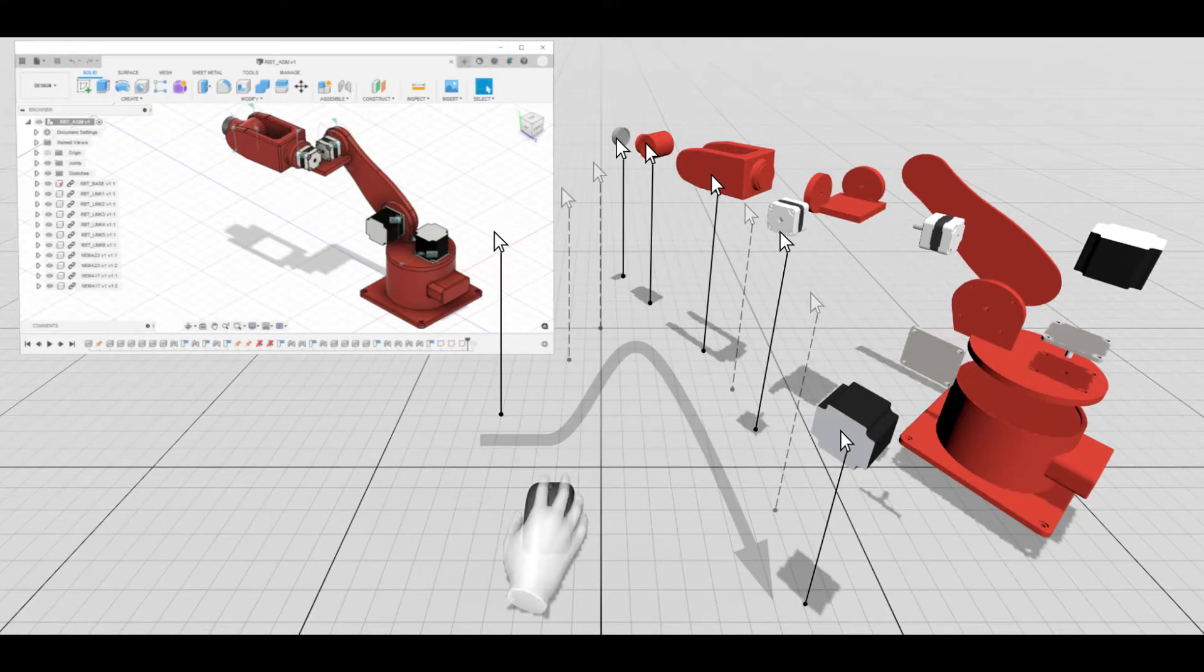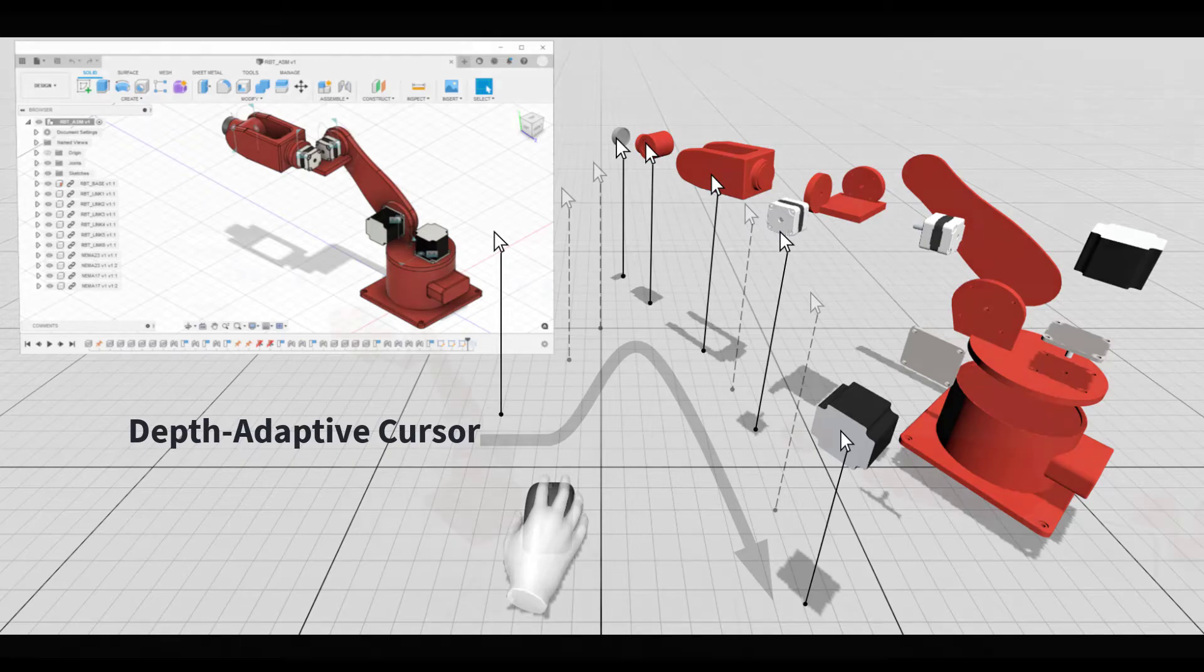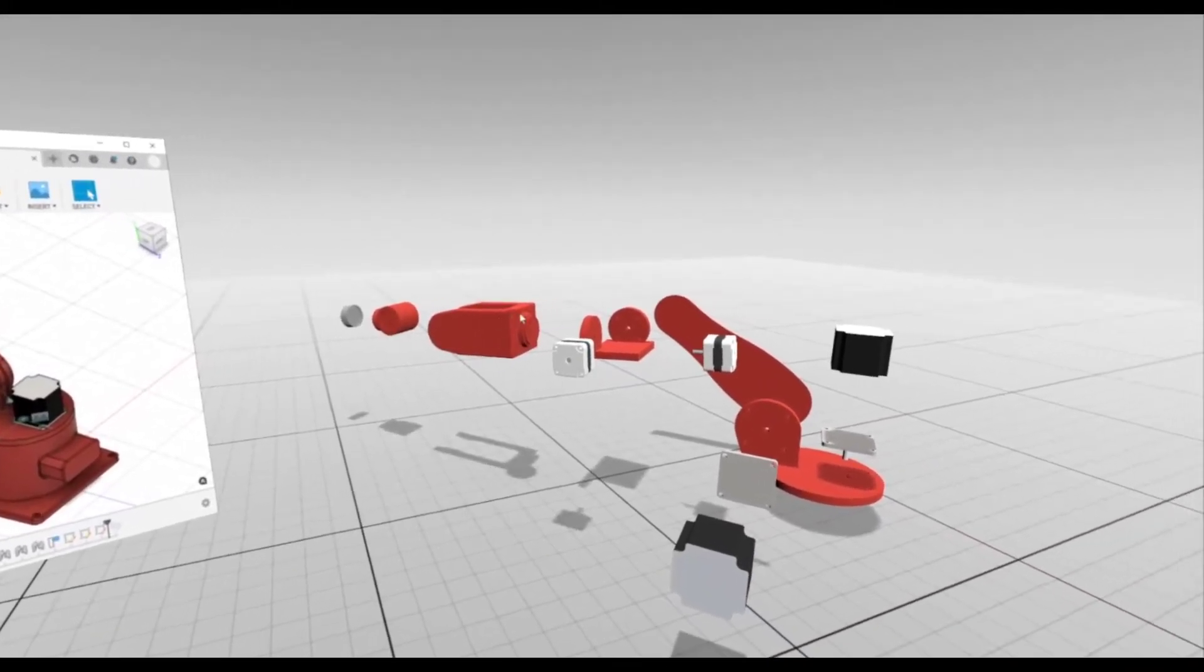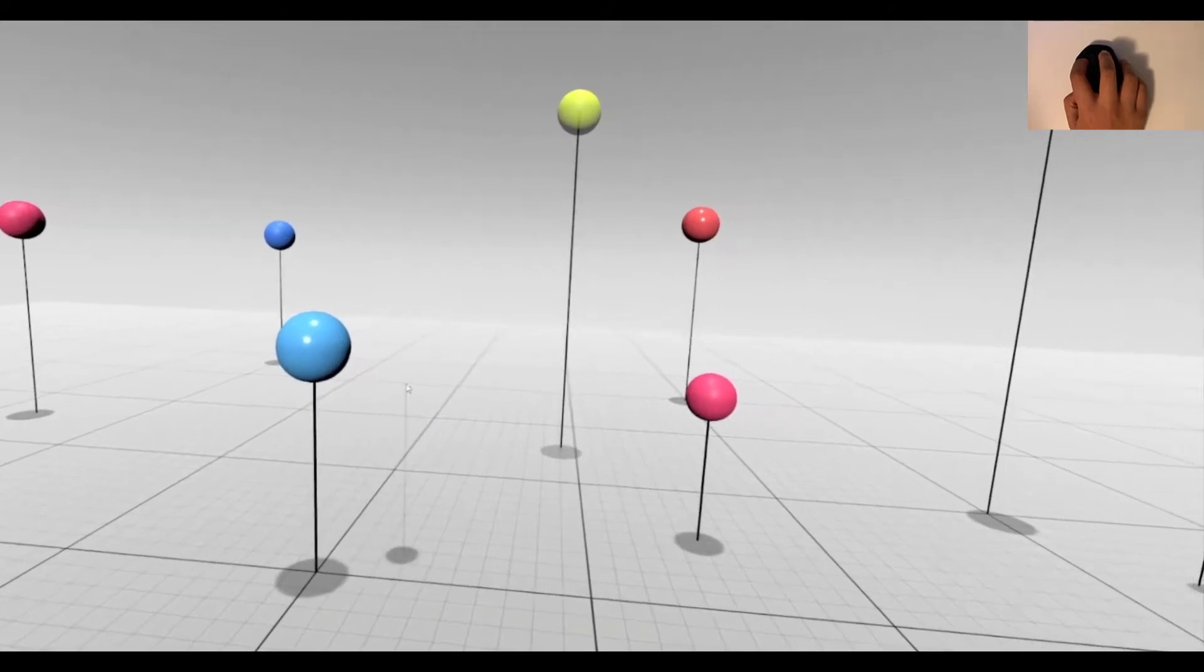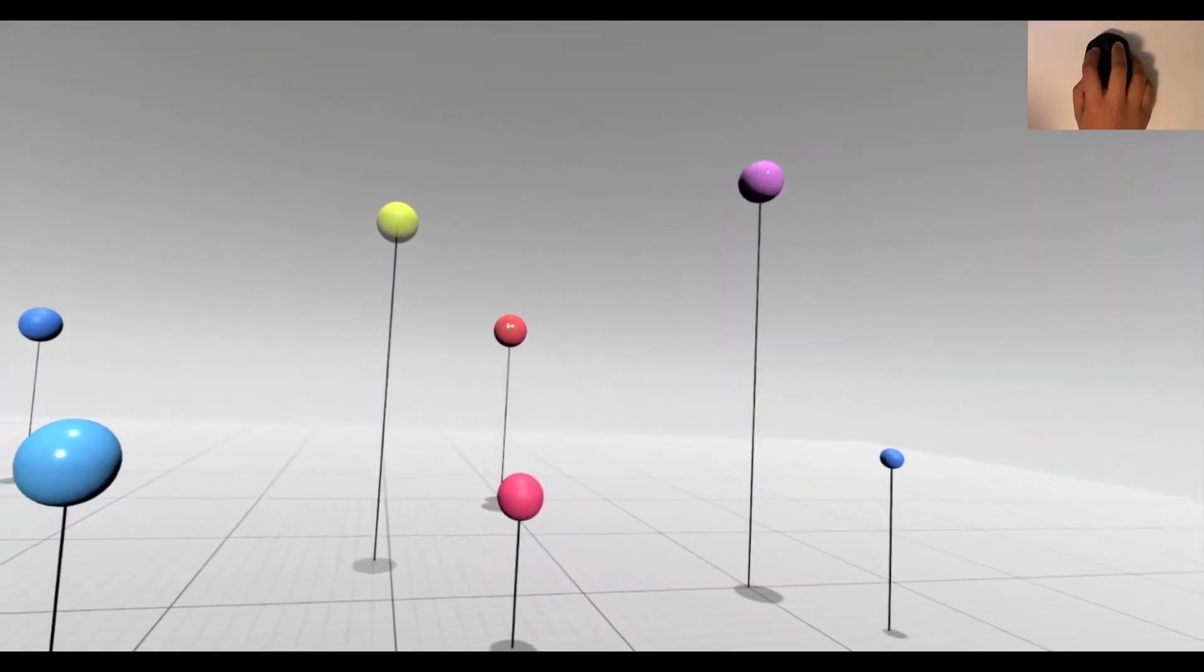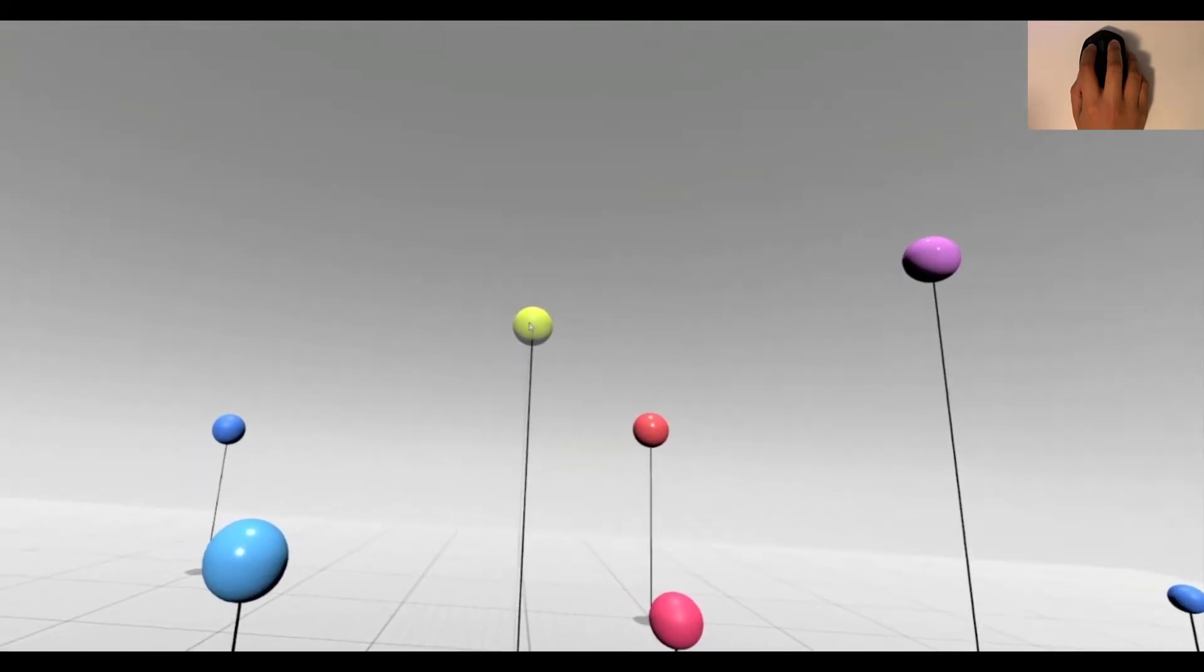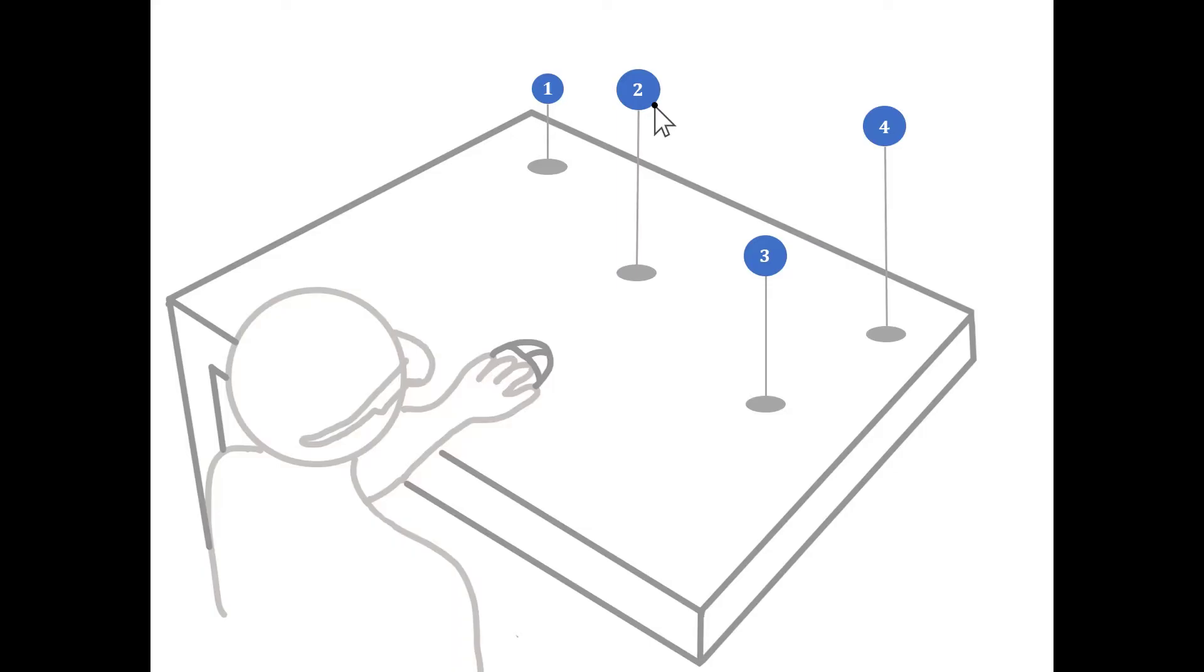To address these problems, we present Depth Adaptive Cursor, a mouse-based pointing technique for 3D selection with depth adaptation. Depth Adaptive Cursor interpolates the cursor depth by inferring what users intend to select based on the cursor position, the viewpoint, and the selectable objects in the scene. It automatically adapts to the depth of the objects nearby and moves continuously in 3D.